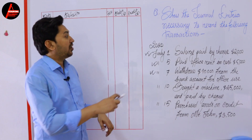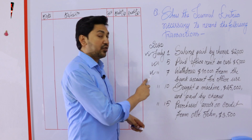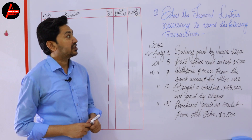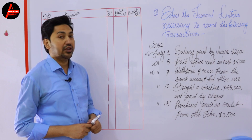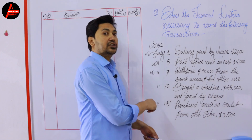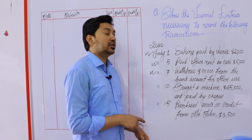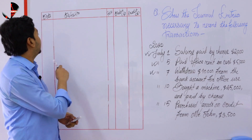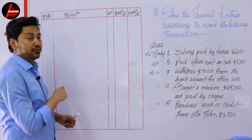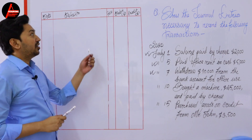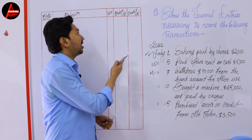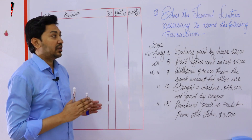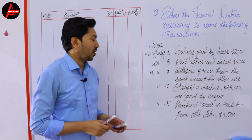Look at the question. Here we have 1, 2, 3, 4, 5 transactions. What is written on the question? Show the journal entries necessary to record the following transactions. So these are the transactions you have to record in the journal book. This is the journal format. Over here we have 5 columns: date, details, folio, debit, and credit. These 2 columns are side by side. You have to put the amount — the value of the transactions.